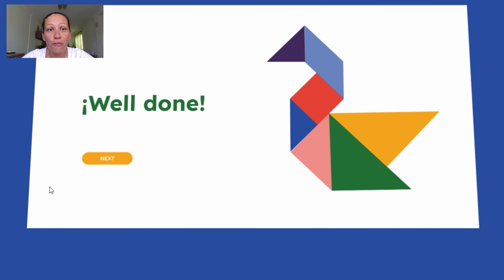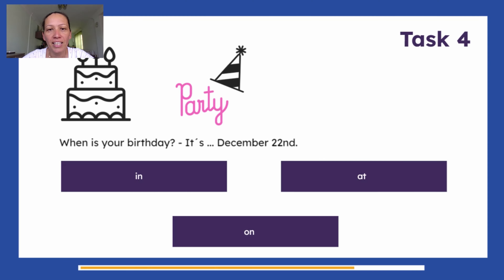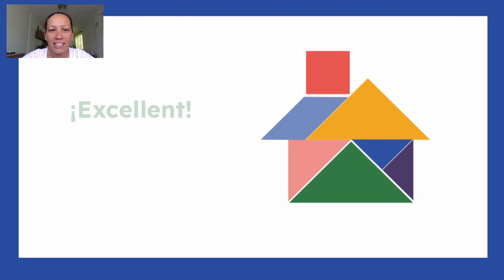Task number four: when is your birthday? It's December 22nd. In, at, or on? Here we're talking about the date, so it will be the preposition 'on'. Excellent!